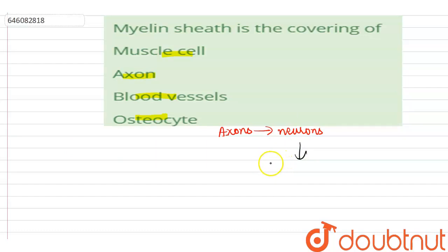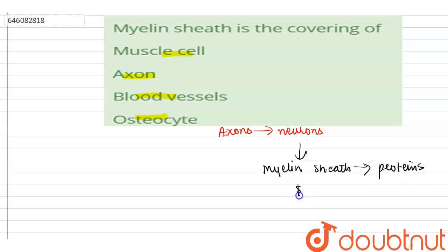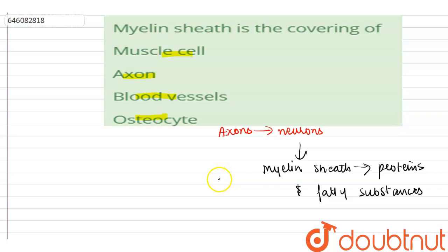Axons of neurons, which are the functional unit of the brain, can be either myelinated or non-myelinated. The myelin sheath is made up of proteins and fatty substances.